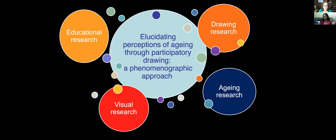So this was my catchy title: 'Elucidating perceptions of aging through participatory drawing: a phenomenographic approach.' These bubbles show that it pulled on drawing research, aging research, visual research methods, and educational research. Just picking up Janet's point — when I looked at visual research methods, I didn't find enough substance to build an entire drawing methodology from it. I then went on a side shoot to arts-based research approaches, and I realized my work probably fits very well there — that's when you're looking at process, what happens during a process of art-making.